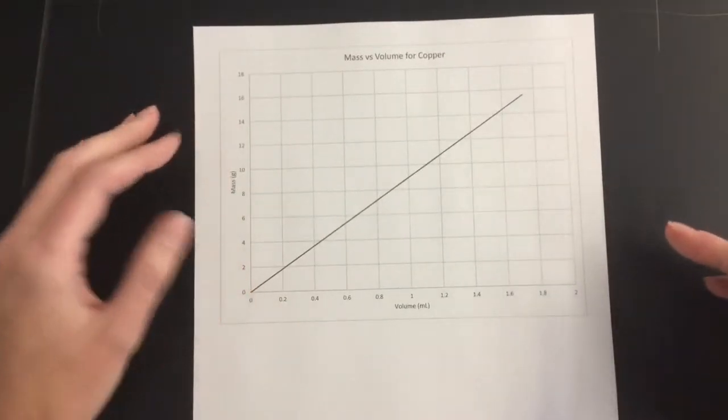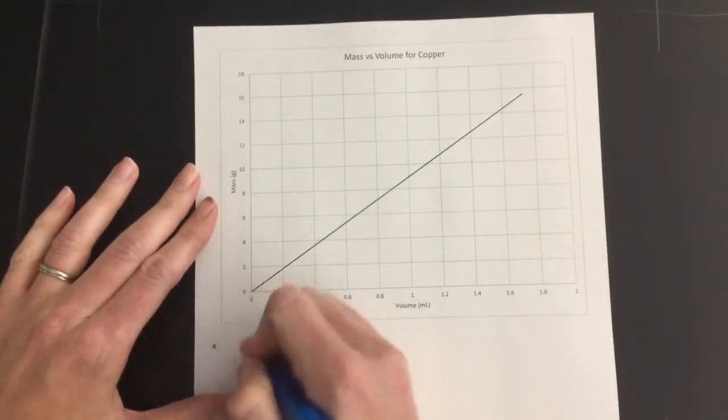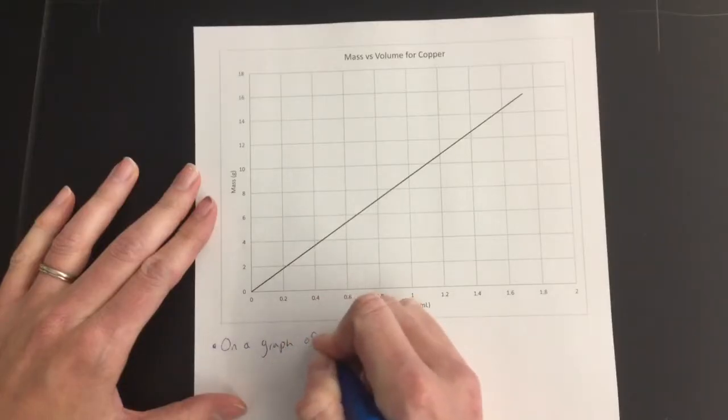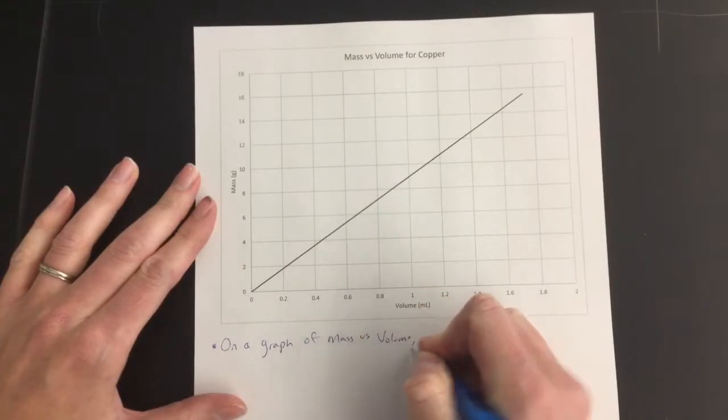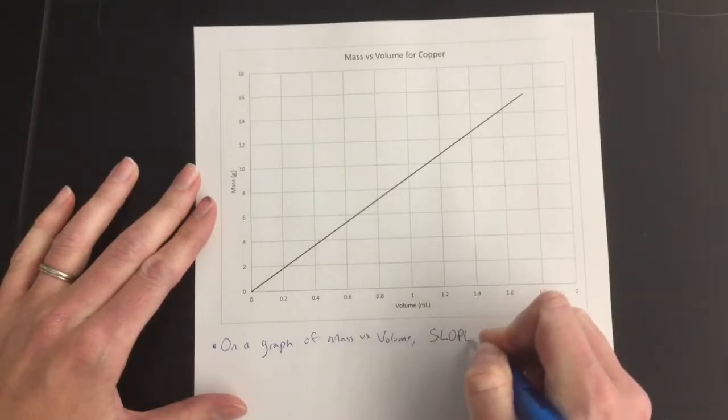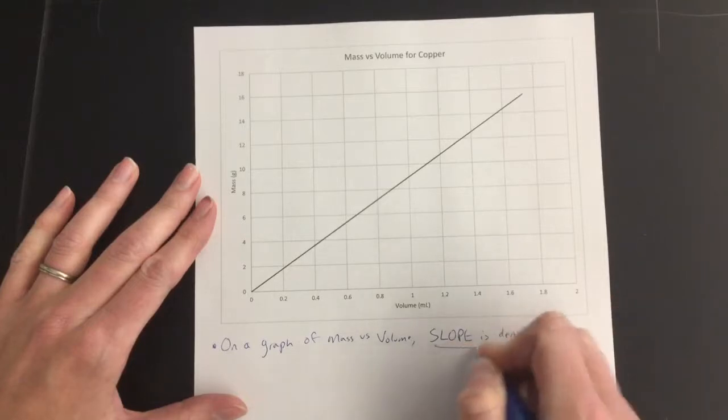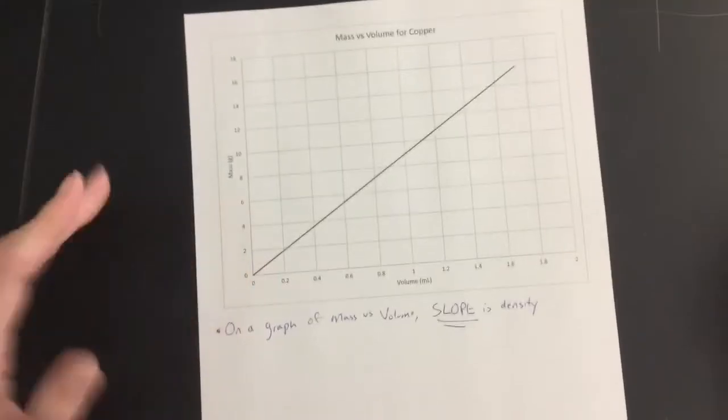But this is specifically about doing the calculation. So what we're going to do is we're going to first remember that on a graph of mass versus volume, the slope is the density. So if a question asks you to find the density and it gives you a graph, it's asking you to find the slope.